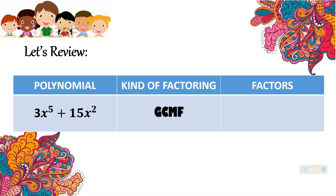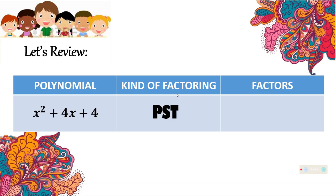Next, let us have x squared plus 4x plus 4. This is under PST. And the factors of this are x plus 2 times x plus 2, or x plus 2 in quantity squared.